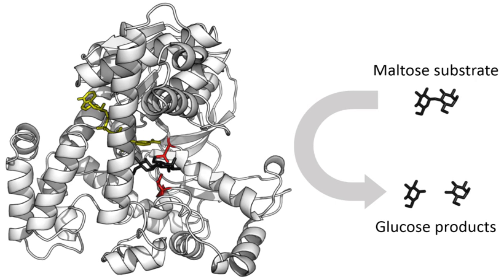Several enzymes can work together in a specific order, creating metabolic pathways. In a metabolic pathway, one enzyme takes the product of another enzyme as a substrate. After the catalytic reaction, the product is then passed on to another enzyme. Sometimes more than one enzyme can catalyze the same reaction in parallel, which can allow more complex regulation. Enzymes determine what steps occur in these pathways. Without enzymes, metabolism would neither progress through the same steps and could not be regulated to serve the needs of the cell. Most central metabolic pathways are regulated at a few key steps, typically through enzymes whose activity involves the hydrolysis of ATP. Because this reaction releases so much energy, other reactions that are thermodynamically unfavorable can be coupled to ATP hydrolysis, driving the overall series of linked metabolic reactions.